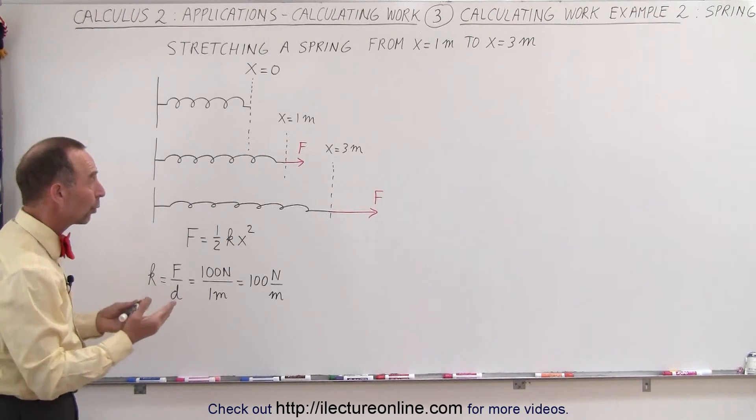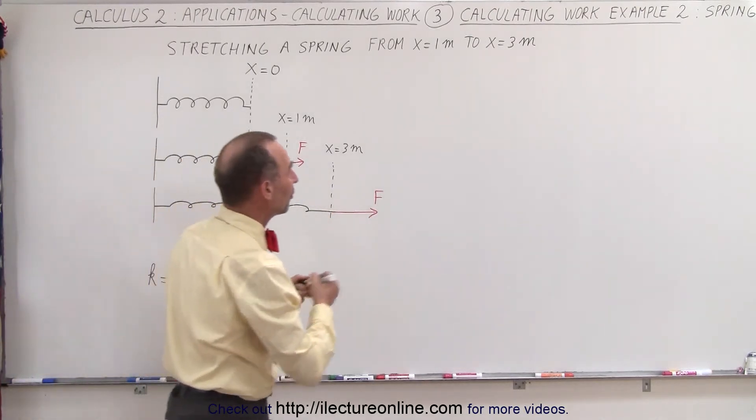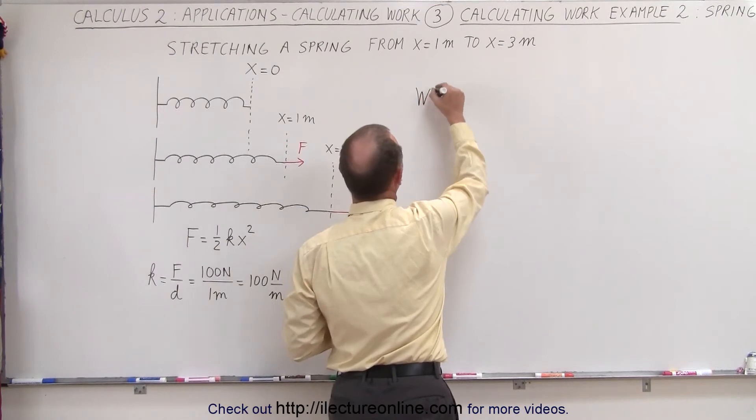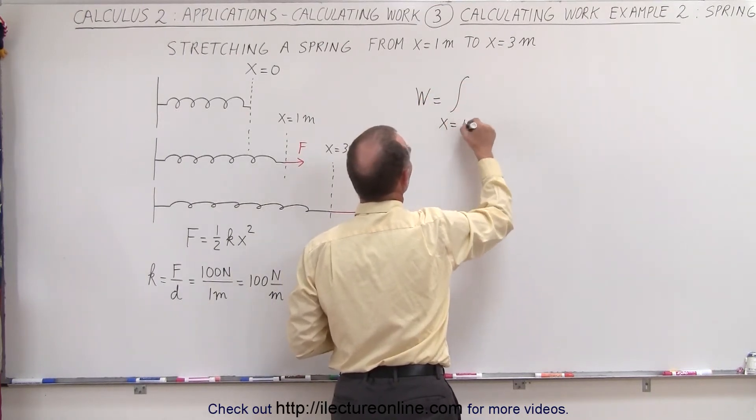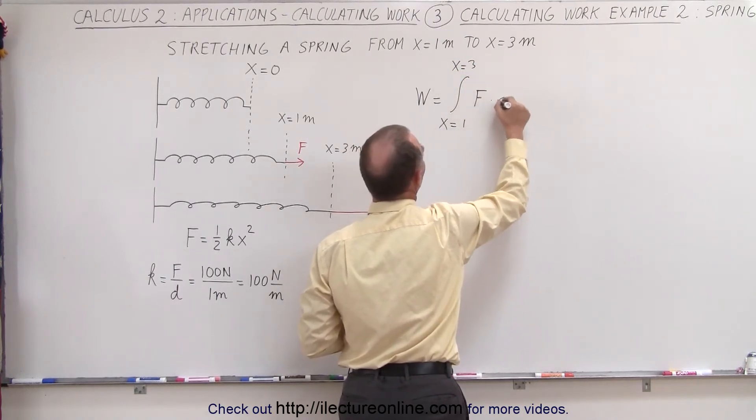So now, to calculate the work done to extend it from 1 meter to 3 meters, we can do what follows. Work done is equal to the integral from x equals 1 to x equals 3 of the force times dx.